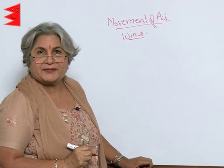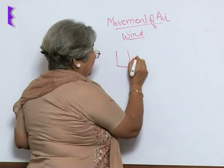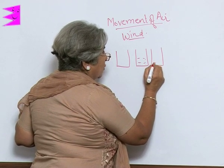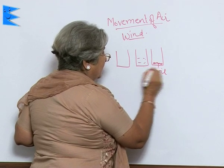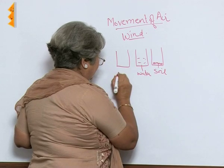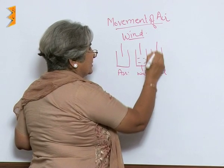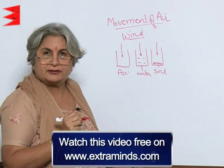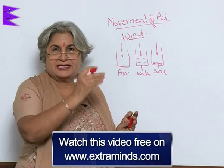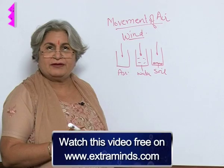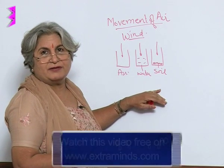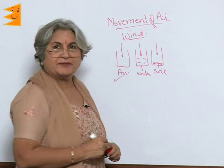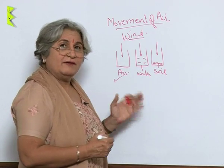How are winds caused? If you take an empty beaker, a beaker with water, and a beaker with soil, put them in sun. You can also put some thermometers — one thermometer in each — and see the rise of temperature. Note it. Then put them in shade and see the loss of temperature. Where will the rise of temperature be faster — in air, water, or soil? Certainly in air. And the loss of temperature will also be faster in air.